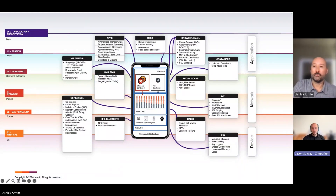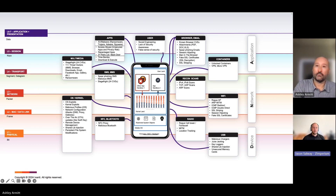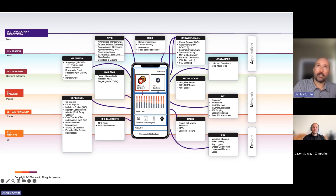When we think about what's possible and where these attacks happen, it's at every single layer of the device. Examples include malicious Bluetooth-based attacks, SMS-based attacks, app-based attacks, and even rogue cell towers seen around the world. The key thing to keep in mind is there's a very broad range of risks and threats to consider when developing a mobility and security strategy — covering DNA: Device, Network, and Application.